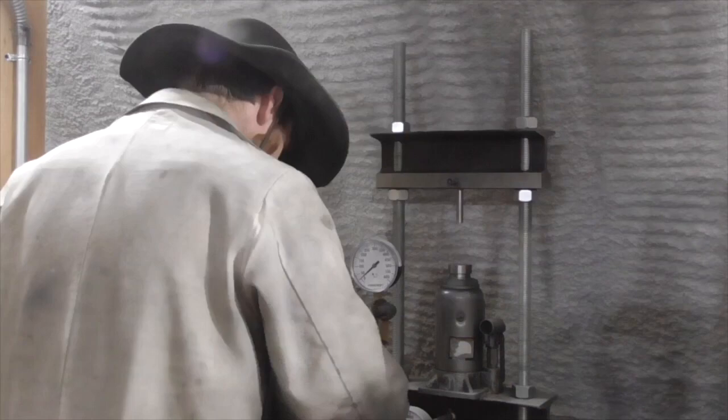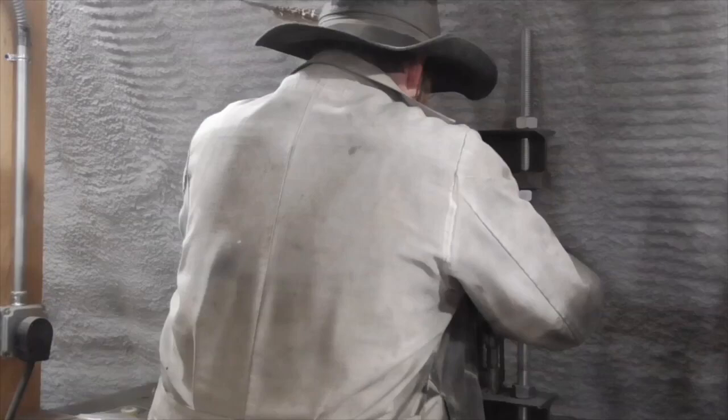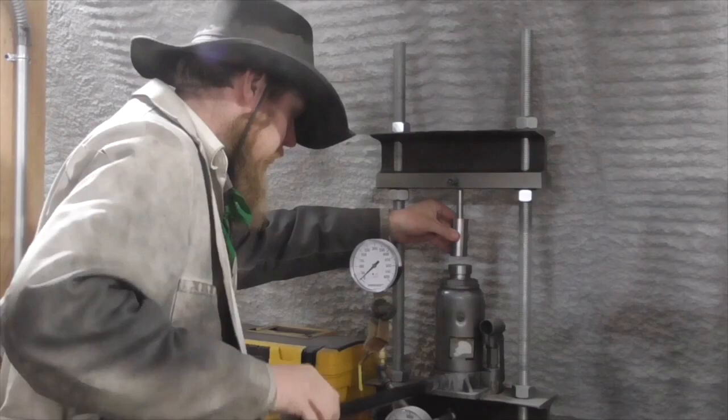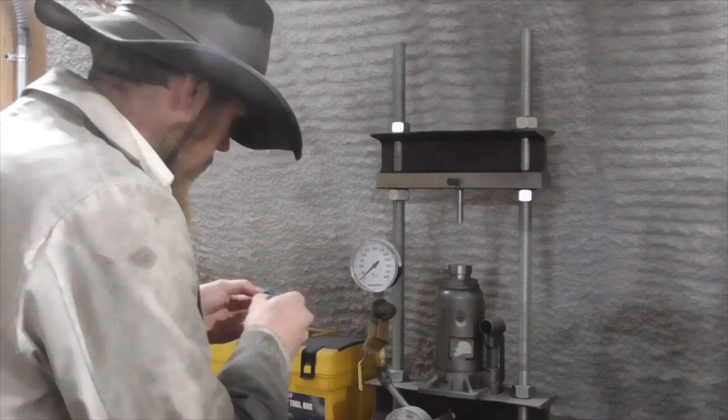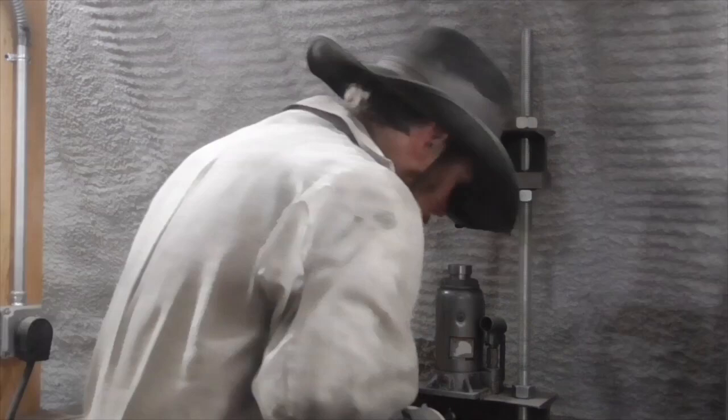Okay, now let's try the SunLU PETG. Okay, the first SunLU specimen broke at 320 PSI, just like our first PLA specimen. Our second SunLU specimen also broke at 320 PSI. And our third SunLU specimen broke at 310 PSI.